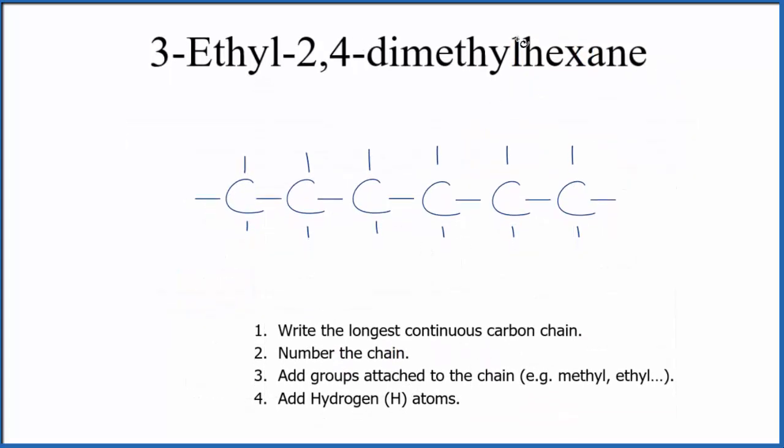So this is our longest chain, this hexane here. It's an alkane made up of six carbons. Let's number them. So the di means we'll have two. We're going to have two methyl groups.